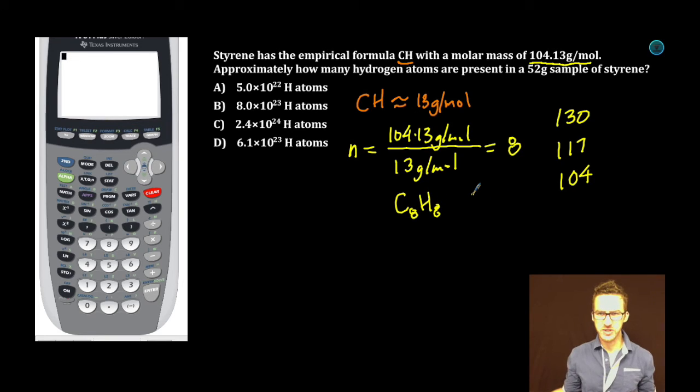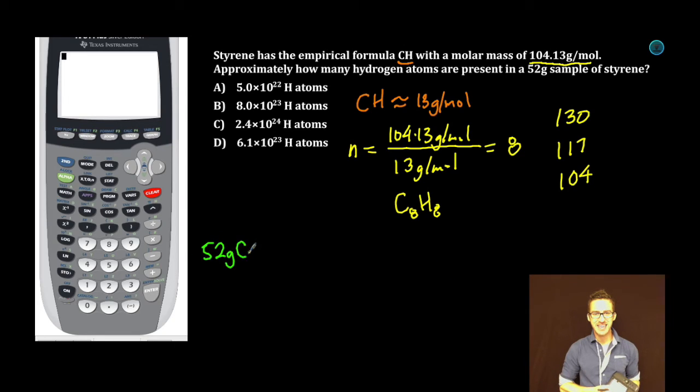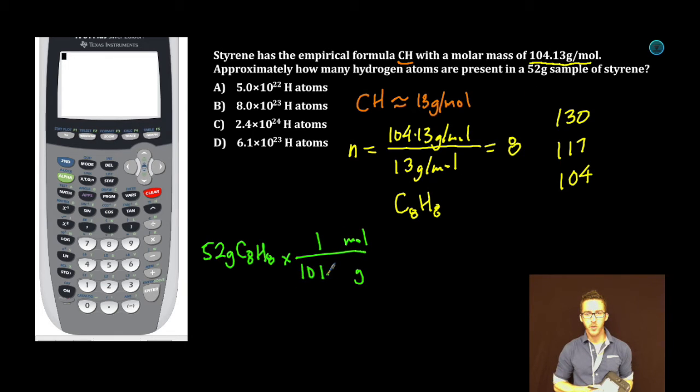Now we didn't actually answer the question. Approximately how many hydrogen atoms are present in a 52 gram sample of styrene? All right. Start with my 52 grams of C8H8. Going to convert to moles. We're told the molar mass is 104.13 grams, and again, we're working with C8H8.